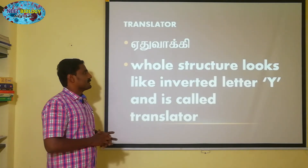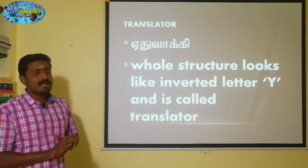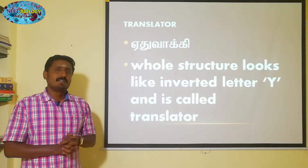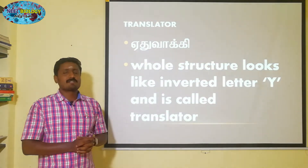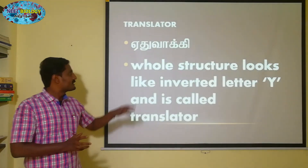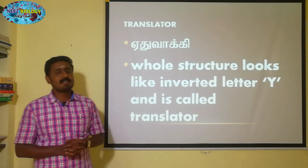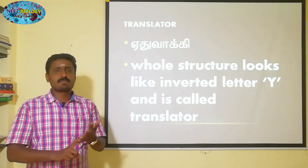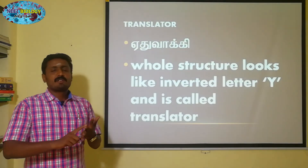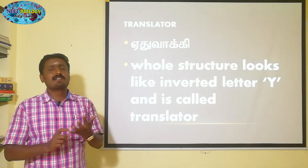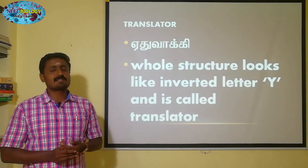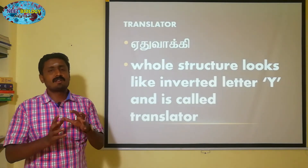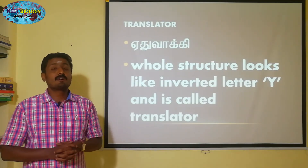The whole structure looks like an inverted letter Y. This structure is called the translator. It is made up of three important structures: the retinaculum, the corpusculum, and the polyneum.